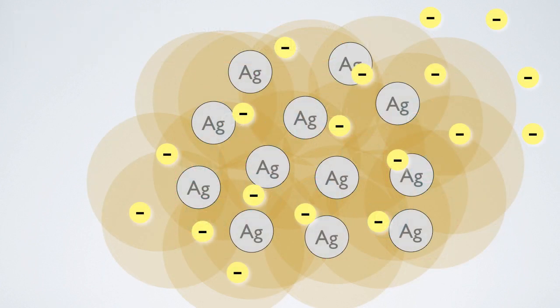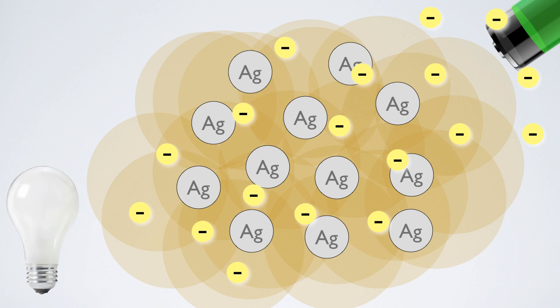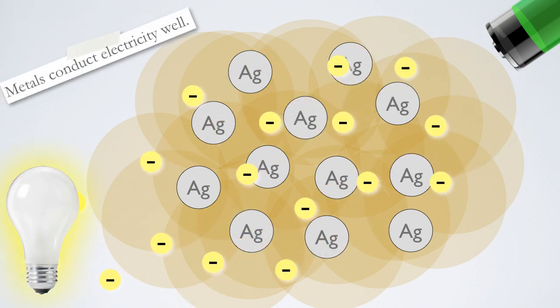Here we have silver, and like all metals, the delocalized electrons of its metallic bonds are free to move around, which means that silver and all metals can conduct electricity quite well.